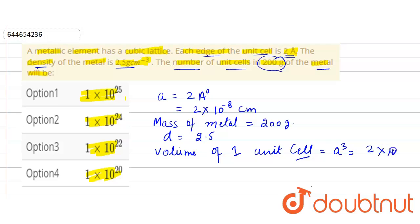is equal to (2 × 10^-8)³. So from here we get 8 × 10^-24 centimeter cube.